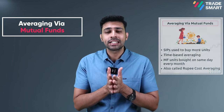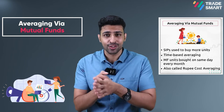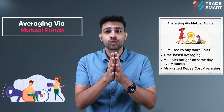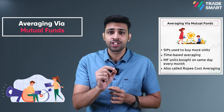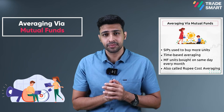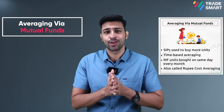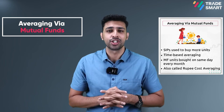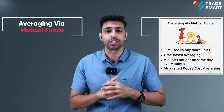The most common type of averaging is found in the mutual fund industry, where Systematic Investment Plans — or SIPs — are used to buy more units of a fund. This averaging strategy is time-based rather than price-based, and it is called rupee cost averaging.